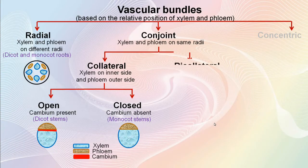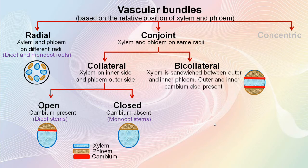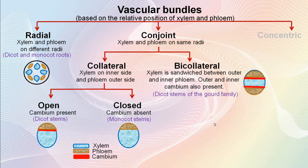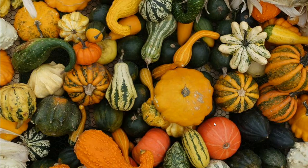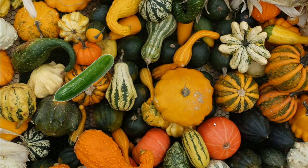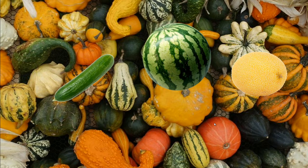The second type of conjoint vascular bundle is called the bicollateral vascular bundle. Here xylem is sandwiched between outer and inner phloem. Outer and inner cambium layers are also present. This special type of vascular bundle is seen in the stems of gourd plants. Gourd plants are crop plants of the family Cucurbitaceae. Some examples are cucumbers, squashes, pumpkins and melons.